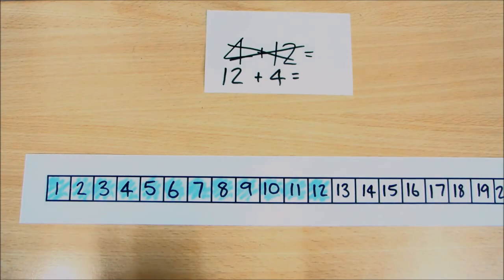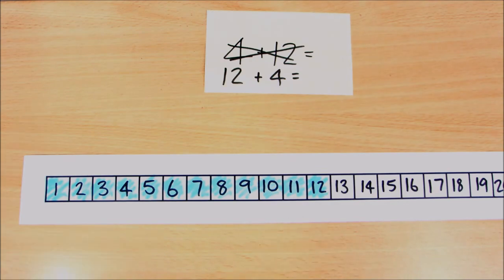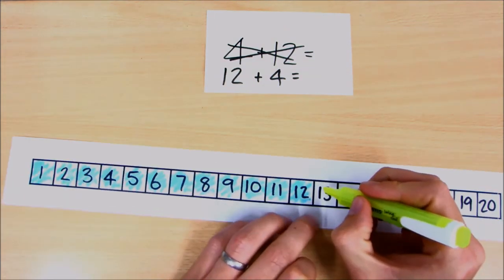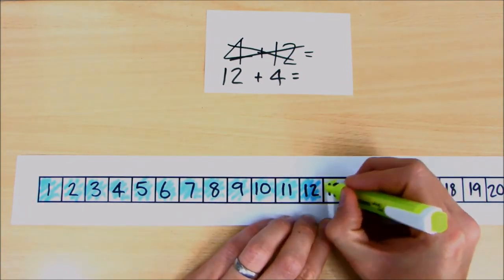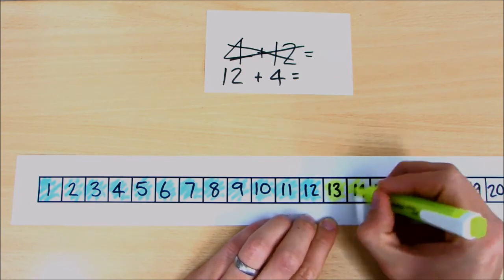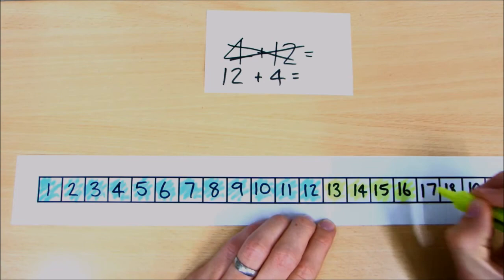Okay, there's our first set of numbers colored, so that's one all the way through to twelve. And now what we need to do is we need to add the four, so we'll color four more on here. Because obviously if we're adding we're always making the number bigger, adding more. So one, two, three, and four.